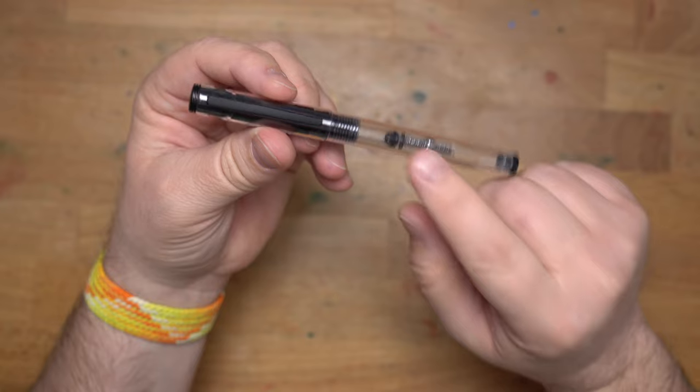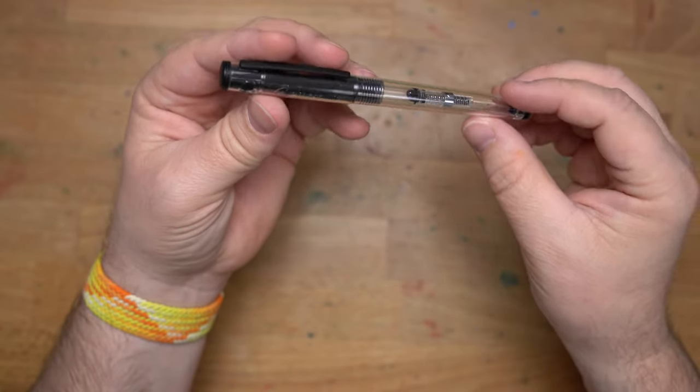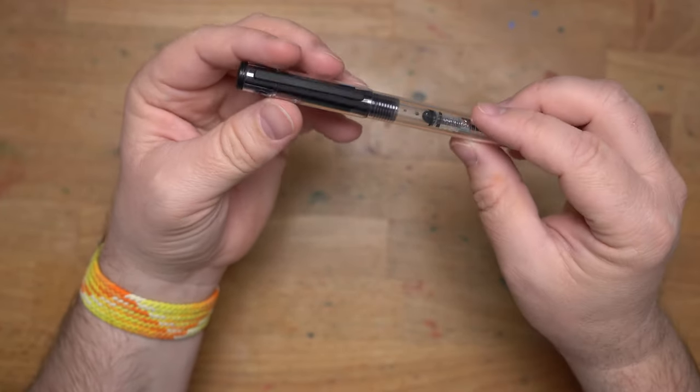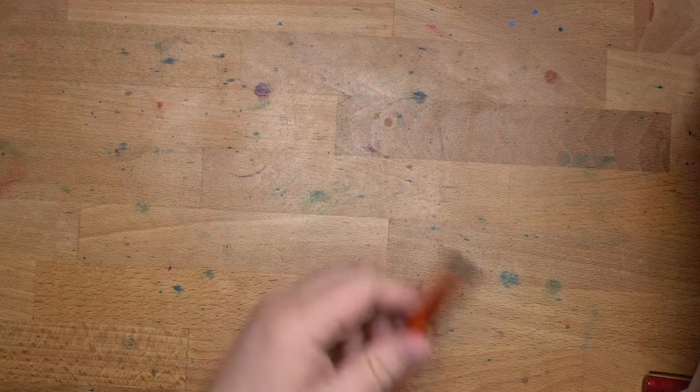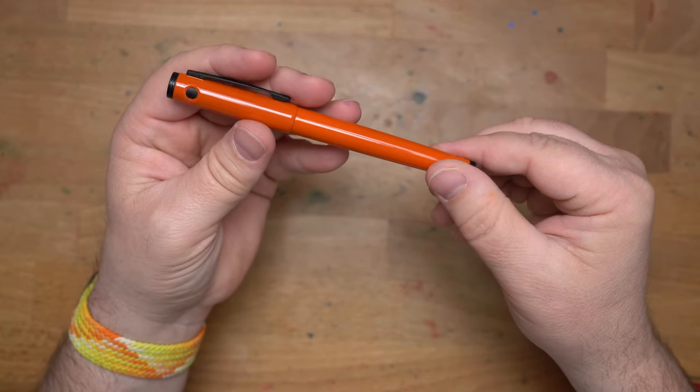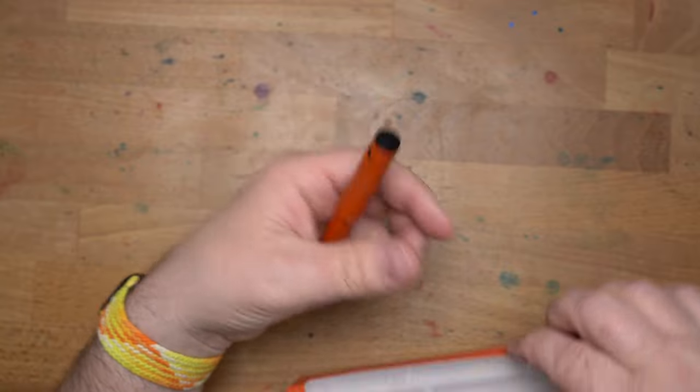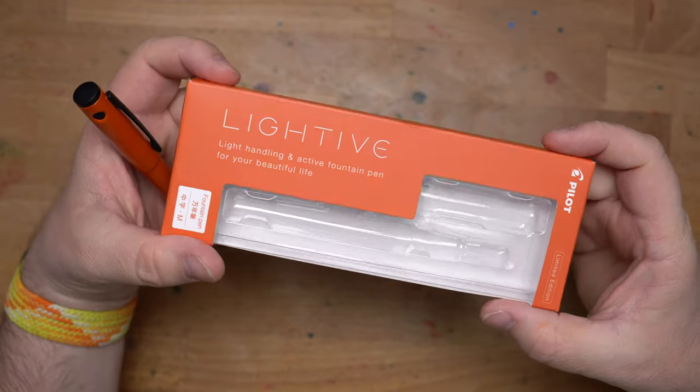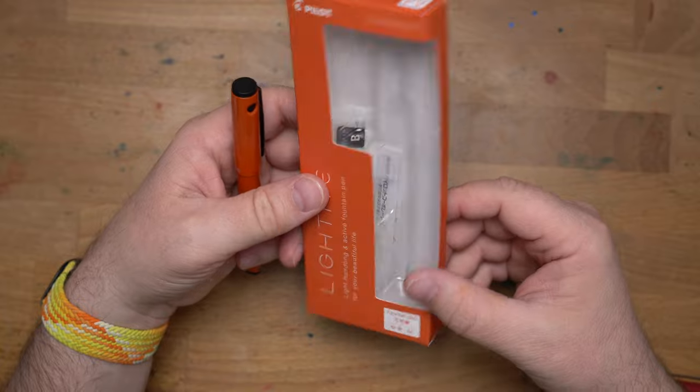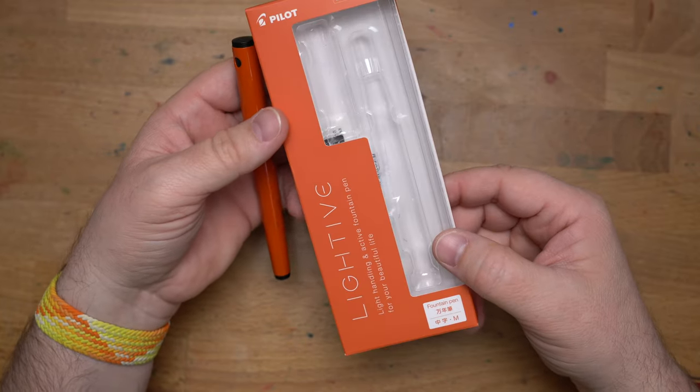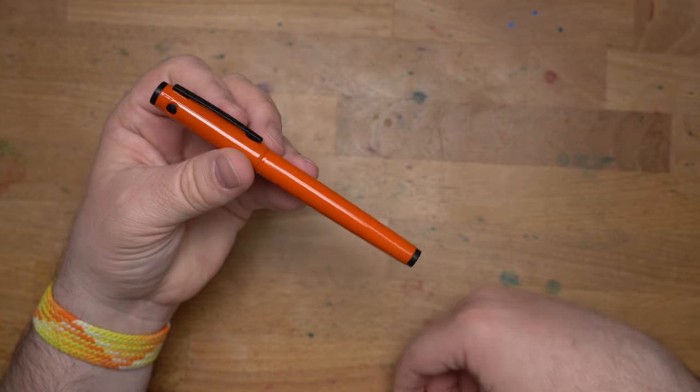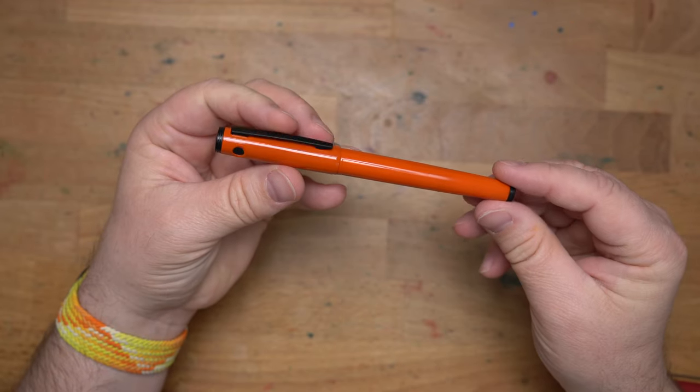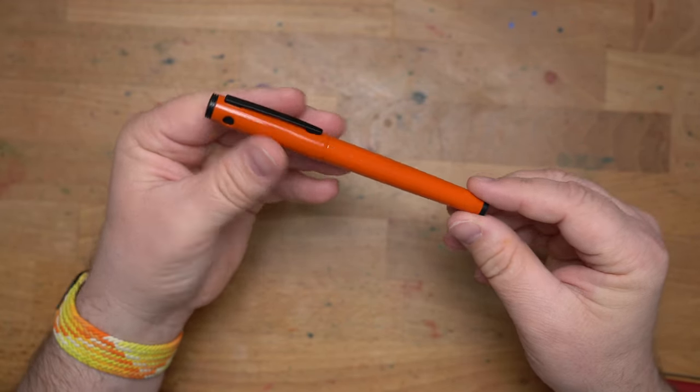So this one as you can see is pretty much entirely empty, so I'm going to be using this other one that a very nice viewer sent out. This is another version of this pen that is in Japan called the Light of. This was a Japanese exclusive color. They're like, hey Mike, you like an orange pen. You know what, I really like an orange pen and I kind of love this one.